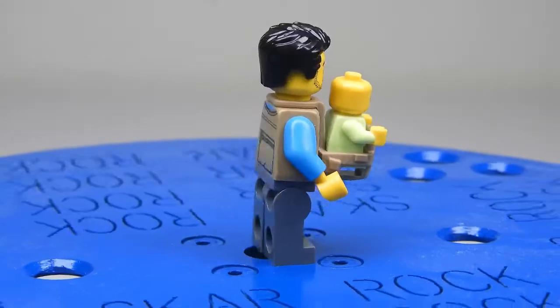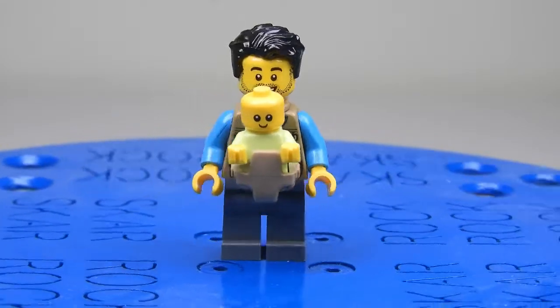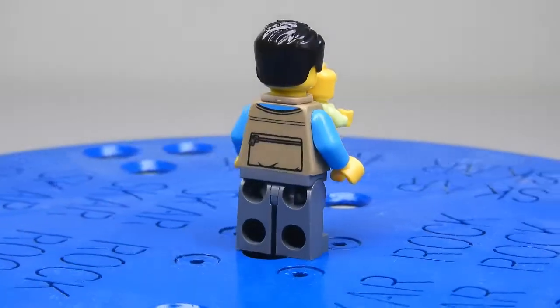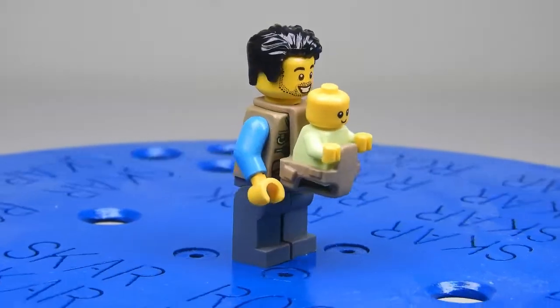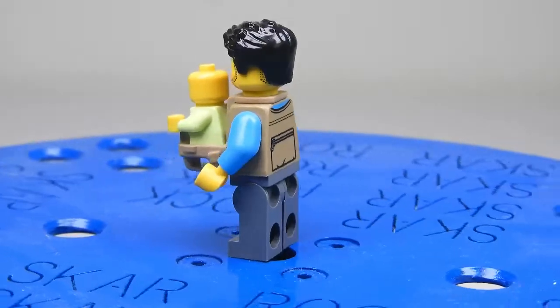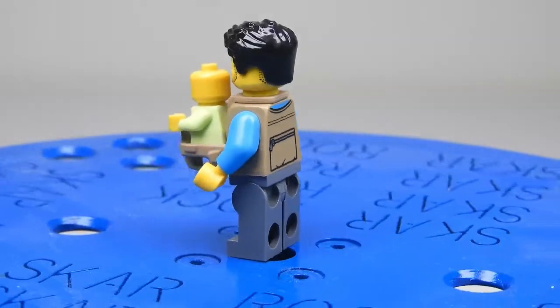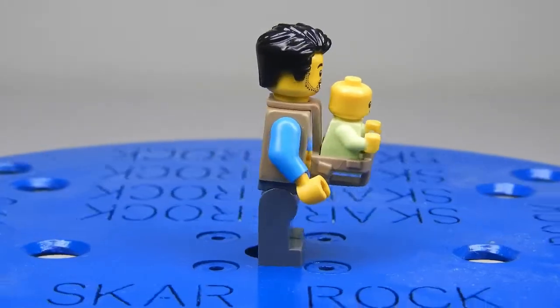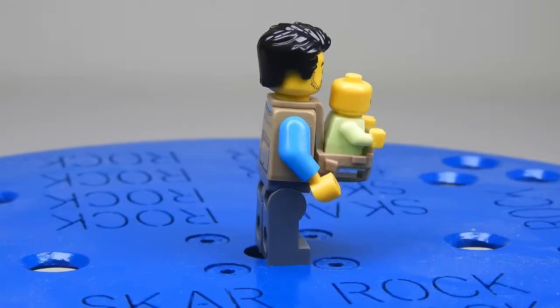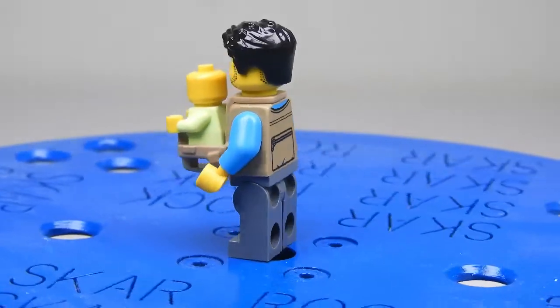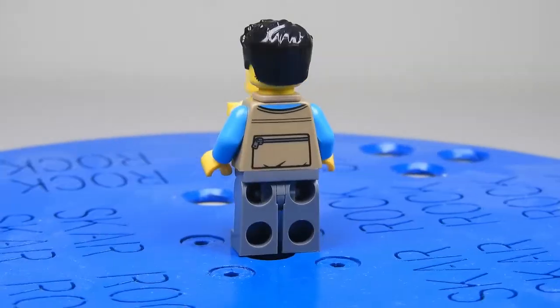Up next we have a father with a child. This is using one of the new baby figures, so baby figs. They've got a much smaller head which can actually come off, and this one has a light green body. It's in this front ways holding piece for the baby, which is attached underneath the dad's head. The dad himself has dark grey trousers, a slightly generic torso with blue sleeves with little pockets on it, including one big one on the back. He's got a face with stubble and a cool black hair piece.